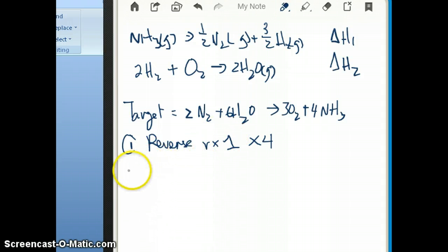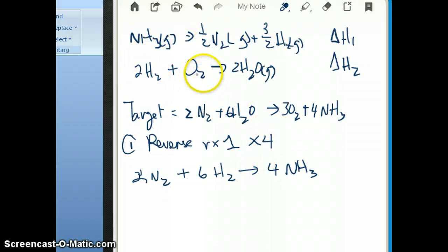So what that means is if I would rewrite this equation the following way. If I reverse and multiply by 4, what I get is 2N2 plus 6H2 forming 4NH3. So that would be what happened if I reverse and multiply by 4.